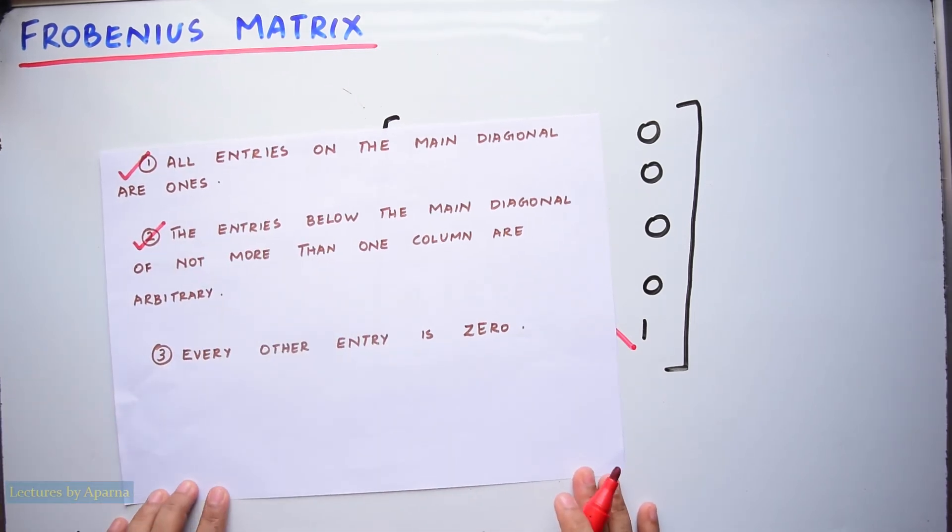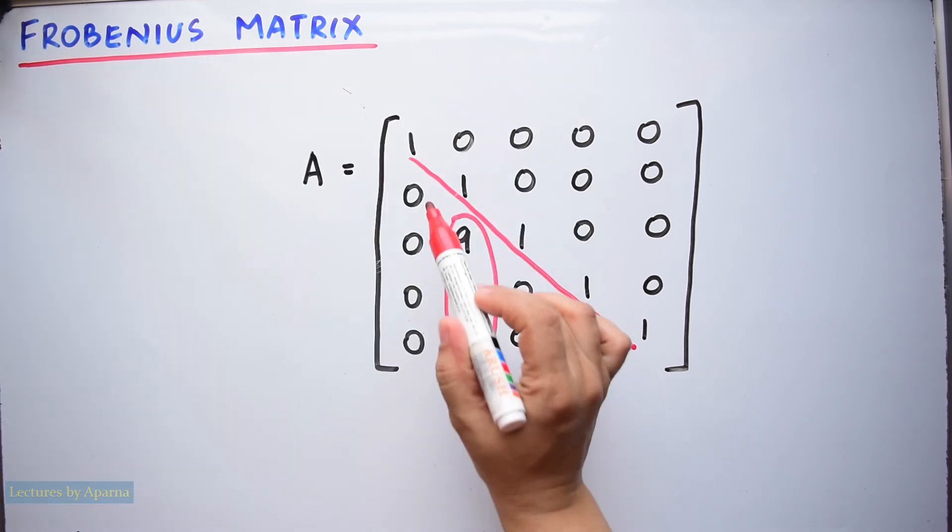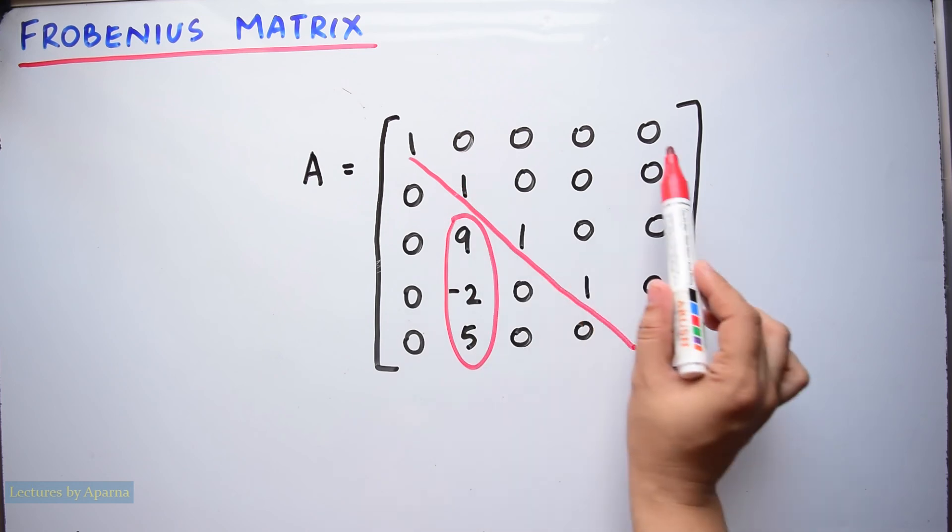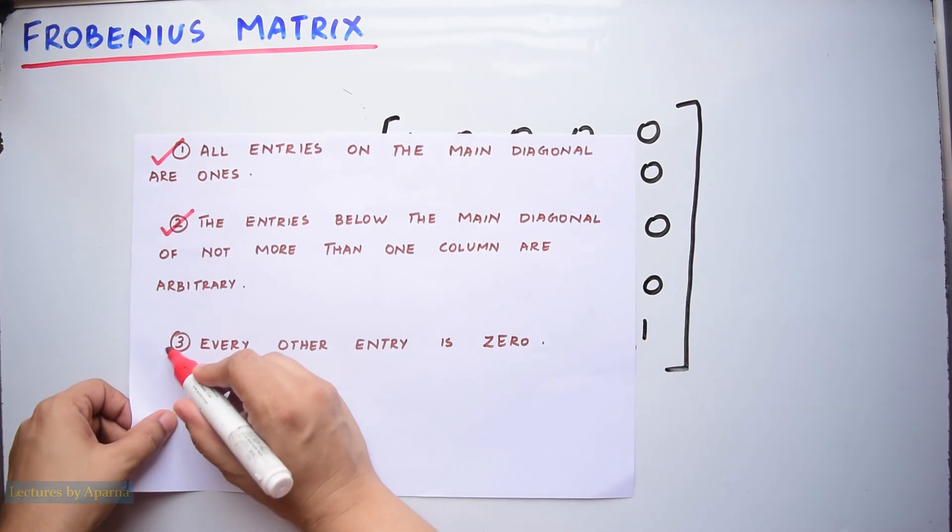Now let us see third condition. Every other entry is zero. So here all other elements in the matrix are zeros. So the third condition is also satisfied.